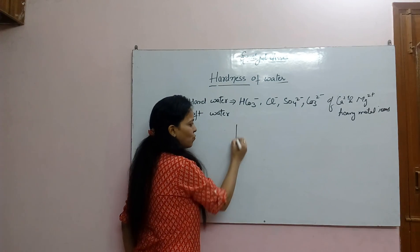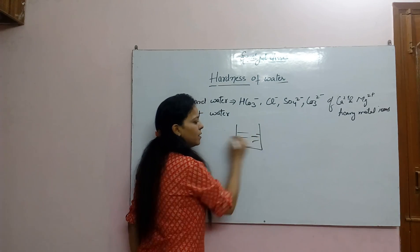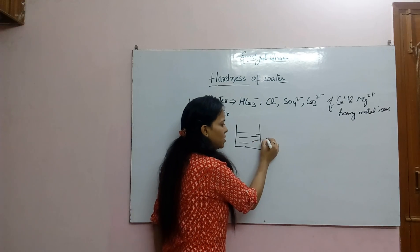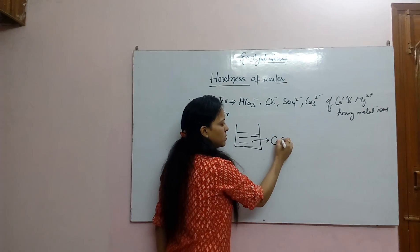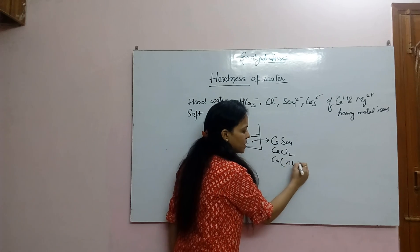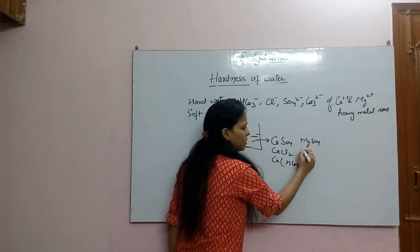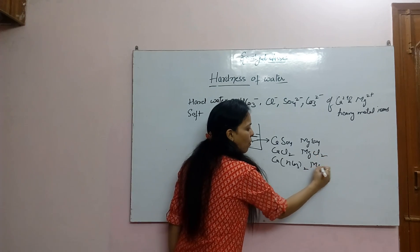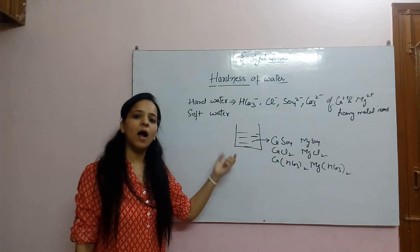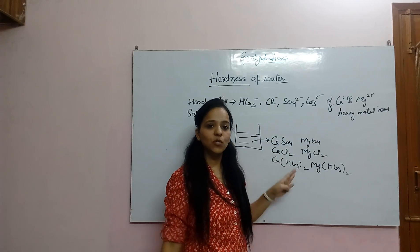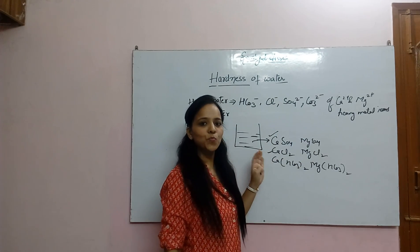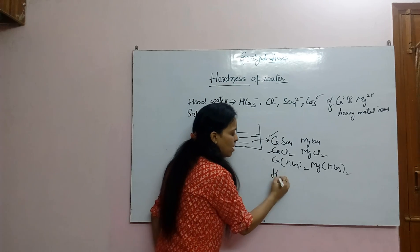For example, अगर आपके पास water है, इसमें calcium sulfate, calcium chloride, calcium bicarbonate, magnesium sulfate, magnesium chloride, या magnesium bicarbonate present है, then this water is known as hard water. जरूरी नहीं कि सारे salts हों — इनमें से कोई भी एक, दो, या सारे salts जिस पानी में present होंगे, वो पानी hard water होगा।